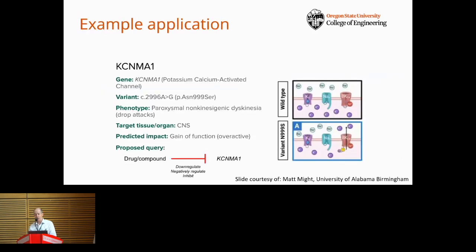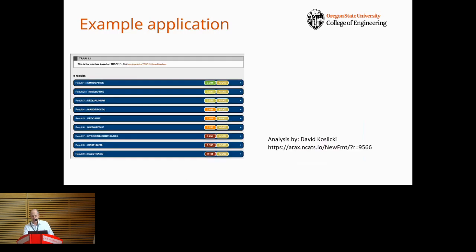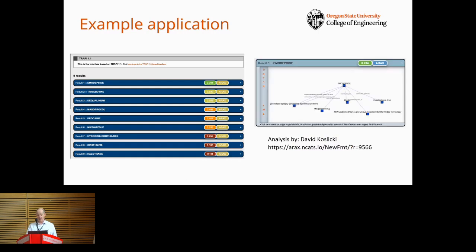Here's an example of an ultra-rare disorder for which ARAX was used to recommend treatments based on the molecular knowledge network of the gene thought to cause the disorder. It's called familial paroxysmal non-kinesogenic dyskinesia — it is very rare, with a prevalence of one in five million people. ARAX returns a ranked list of potential therapeutic agents, and for each result, the knowledge graph specific to that result can be displayed by clicking on the plus symbol.